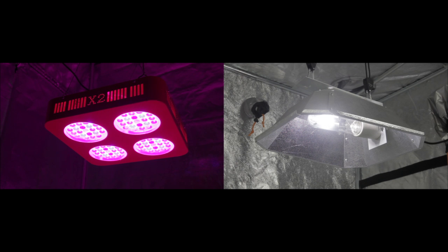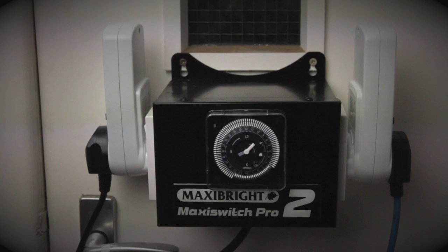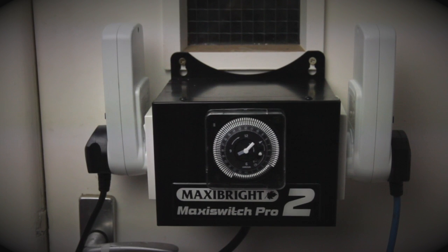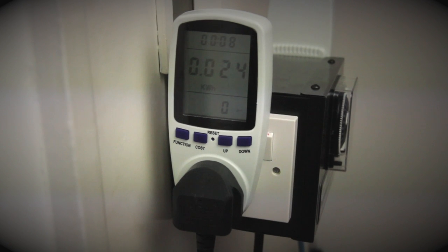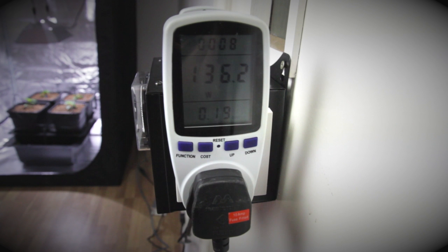Both lights are on the same 18 hours on, 6 hours off light cycle, controlled by this MaxiSwitch Pro and their electricity usage measured by these two units. We'll be updating you on this each week.